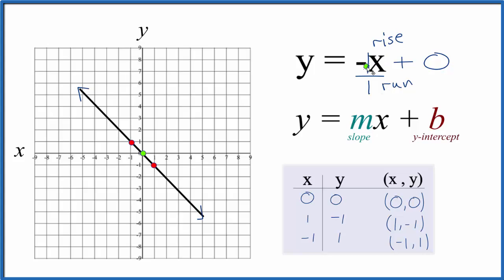So if this were positive 1, we would go up 1 and then over 1. But since it's negative 1, we're going to go down 1 and then over 1. So we go to our y-intercept, down 1 over 1, and there's our point. And we can just keep doing this, down 1 over 1, and all these points still fall on our line.